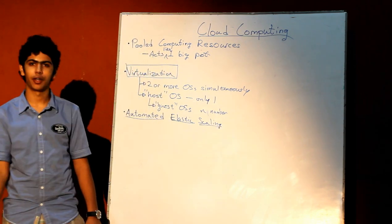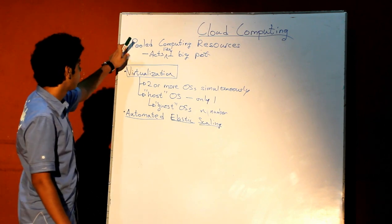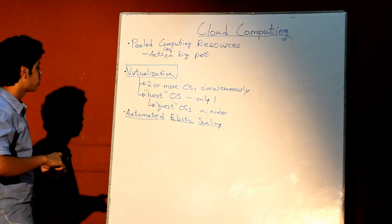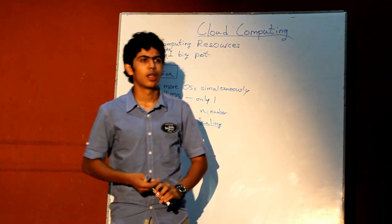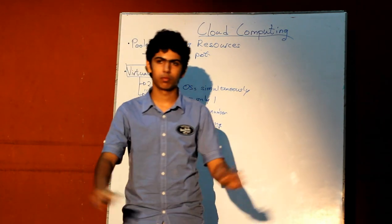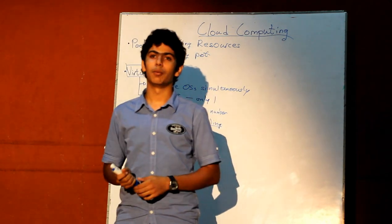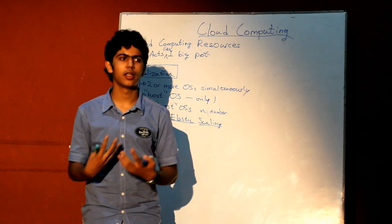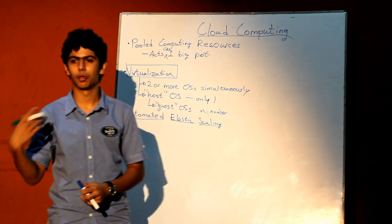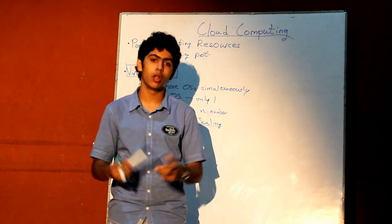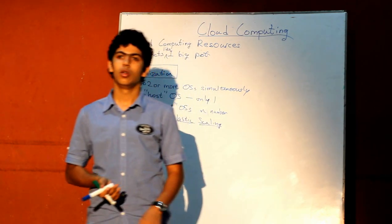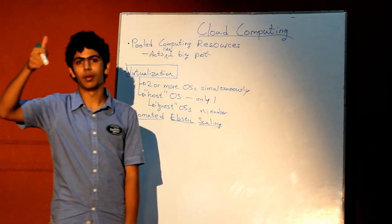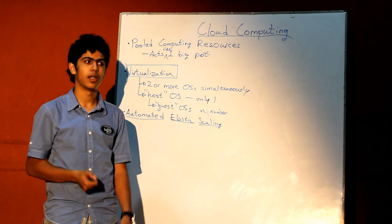Automated elastic scaling is the defining factor of the cloud. It ties together with virtualization and pooled computing resources quite significantly. What automated elastic scaling means is, if I have a web app running on some cloud architecture, for example Amazon's retail website, based on studies of traffic, I know that during holiday seasons like Christmas, school holidays, summer, or Diwali, I'll get a spike in bandwidth, requests per day, and hits my site gets.